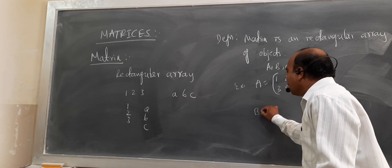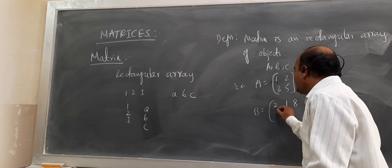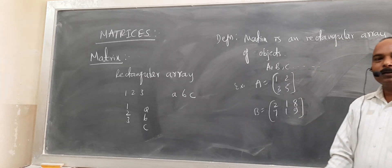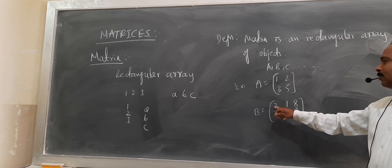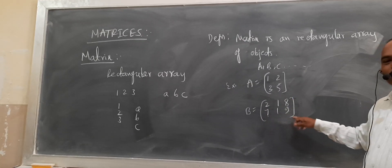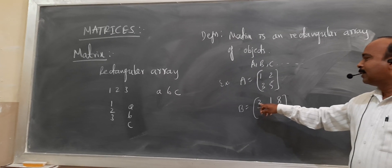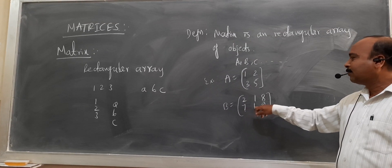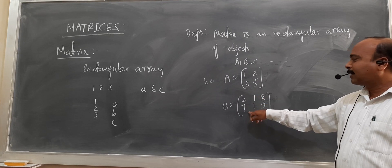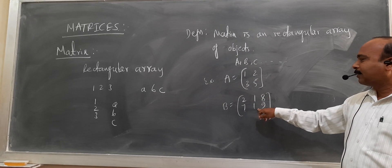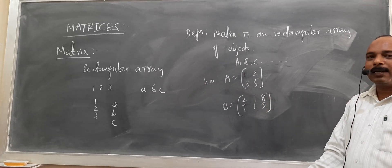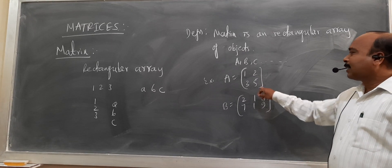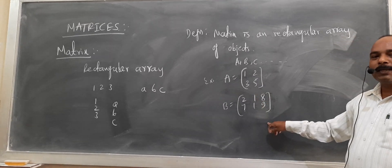Consider another example: B equal to [2, 1, 8; 7, 1, 9]. Here we observe there are totally 2 rows and 3 columns. In the first row we observe 2, 1, 8. In the second row the elements are 7, 1, 9. And 2, 7 are called elements of the first column; 1, 1 are elements of the second column; and 8, 9 are elements of the third column. These are examples of matrices with different rows and columns.